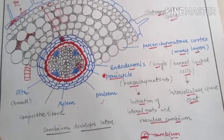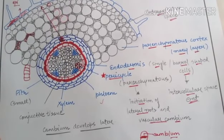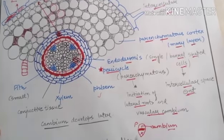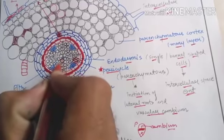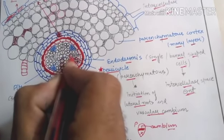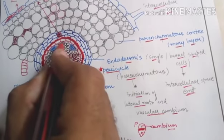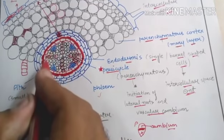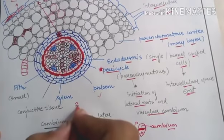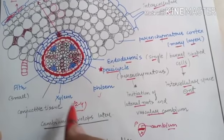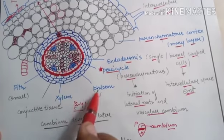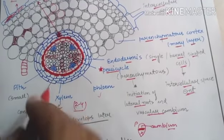Now it is time for xylem and phloem. We have talked about two types of vascular bundle arrangement: radial and conjoint. In conjoint they are on the same radius, but in roots they are present on different radii — this is the radial arrangement. There are two to four xylem patches and two to four phloem patches. The xylem and phloem are in the form of two to four bundles and they are scattered alternately.